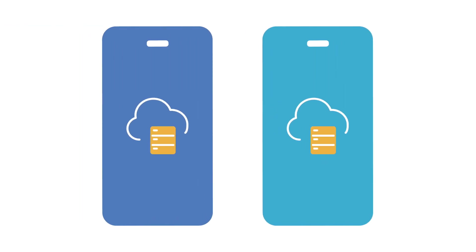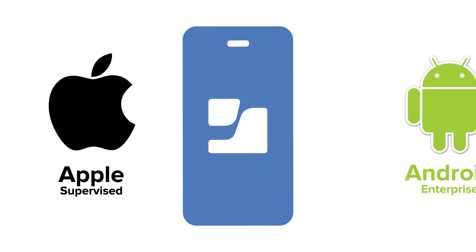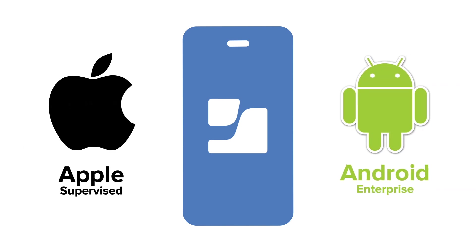Jamf Data Capping can be deployed to users in two ways. The first and most common means of deployment is called managed deployment, where organizations leverage a unified endpoint management or UEM solution such as Jamf Pro. UEMs allow organizations to automatically install the Jamf Trust app, along with its required settings, avoiding the need of much user interaction. Deploying Jamf Trust to Apple supervised and Android enterprise devices via UEM has the additional benefit of making the app non-removable on-device, preventing users from being able to circumvent Jamf Data Capping.